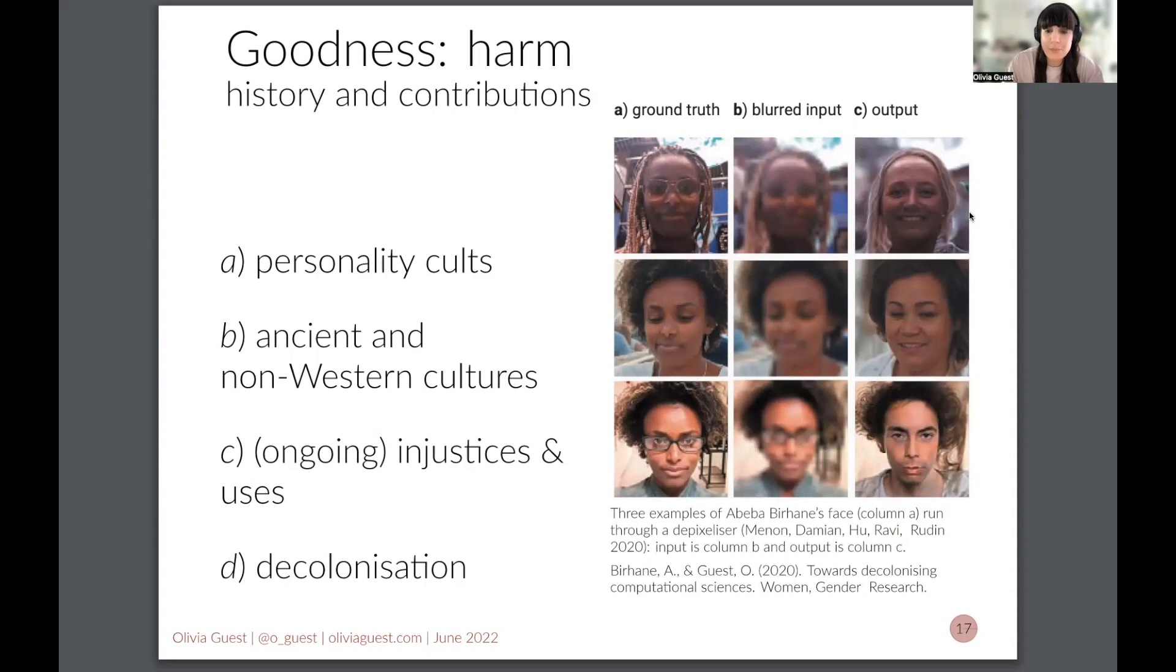So this is an example of a machine learning algorithm where the first column, so the leftmost column is the ground truth. The middle column is we added blur to my co-author's face and then we put it through a de-pixelizer, de-blurring algorithm. So an algorithm that attempts to reconstruct what it thinks the input was and what you see is that her face is sort of masculinized and whitened. If this is the sort of way that this model works, it shows that if we use this model as a model of the brain or if we use this model in any other applied situation, there's a problem and it is a serious problem that we need to deal with because it is either a product or a byproduct of our scientific work with, in this case, neural networks or models of vision.